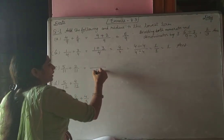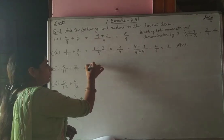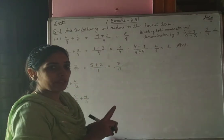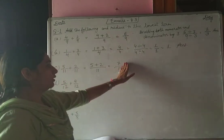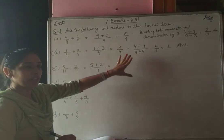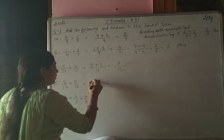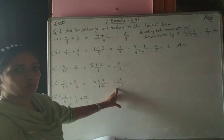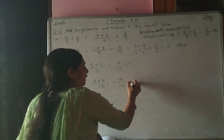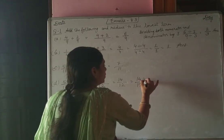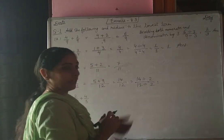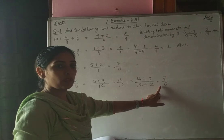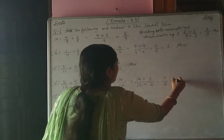Next: denominator is 11, so LCM is also 11. 5 plus 2 equals 7 by 11. Since 7 and 11 are both prime numbers, they have no common factor other than 1, so this number stays as is — already in lowest form. Next: denominator 12, 5 plus 9 gives 14 divided by 12. Both are even numbers, so HCF is 2. Dividing both by 2 gives 7 by 6, which has no further common factor — so the answer is 7 by 6.